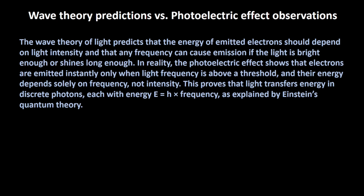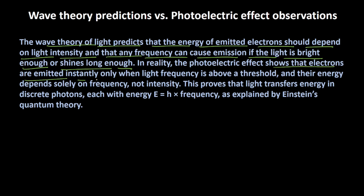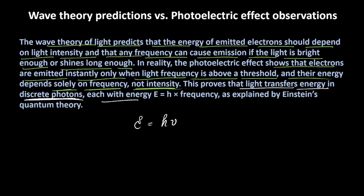The final conclusion is that the wave theory of light predicts that the energy of the emitted electron should depend upon the light intensity, and that any frequency can cause emission if the light is bright enough or shines for a longer time. But in reality, as per the photoelectric effect observations, electrons are emitted instantaneously — there is no time lag — when light of a frequency above the threshold is used, and the maximum kinetic energy depends solely on the frequency, not on the intensity. This major contradiction led to the conclusion that light transfers energy in discrete photons, each with energy given by H times nu, as explained by Einstein's quantum theory. I hope you are now clear with what the wave theory predictions were and how they were different from the photoelectric effect observations. See you in the next video!